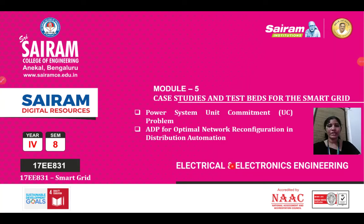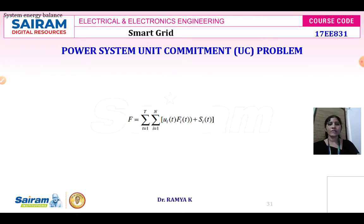Good morning students. In today's class we are going to see the power system unit commitment problem, ADP adaptive dynamic programming for optimal network reconfiguration in distribution automation. First we will see the power system unit commitment problem. The main objective of the unit commitment problem can be formulated as a sum of cost of all units over time, and presented mathematically as a constraint model for the optimal utilization problem.